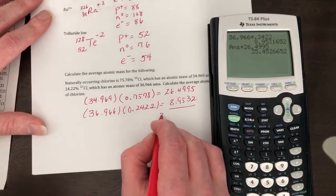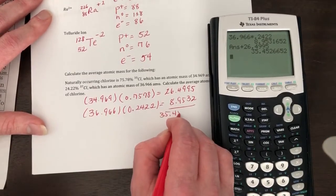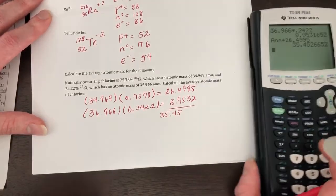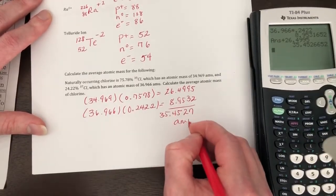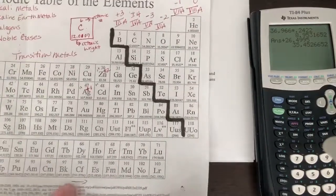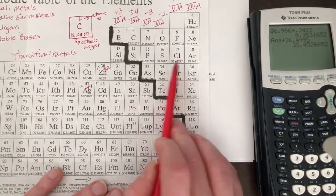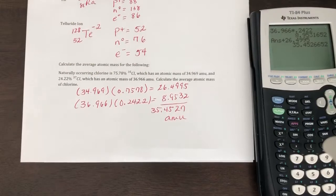Okay, so you get 35.4527 AMUs, and that's really close to the mass of chlorine. So you did it right.